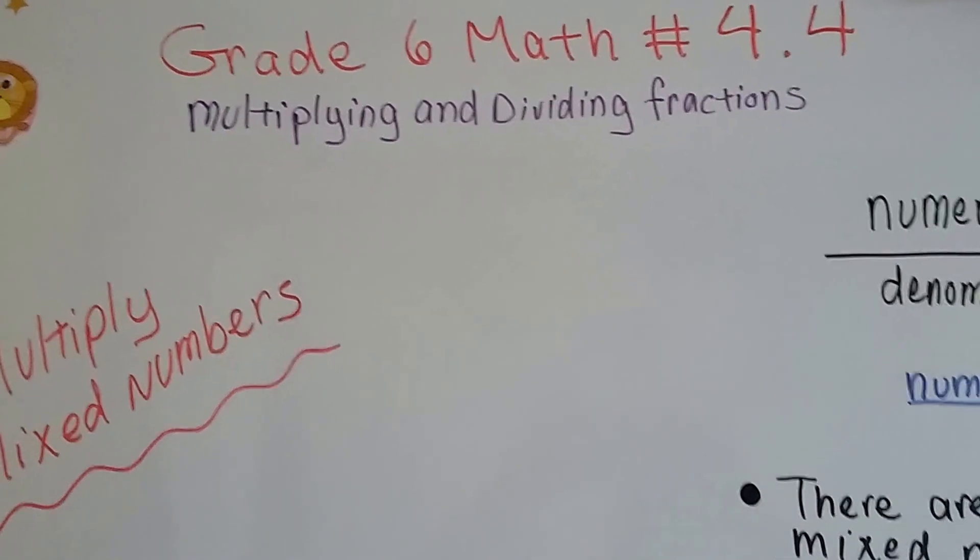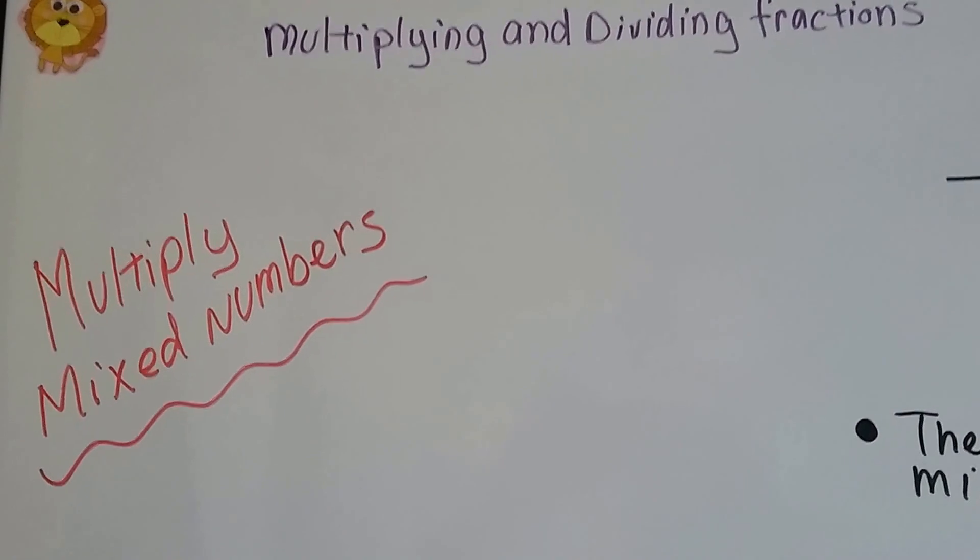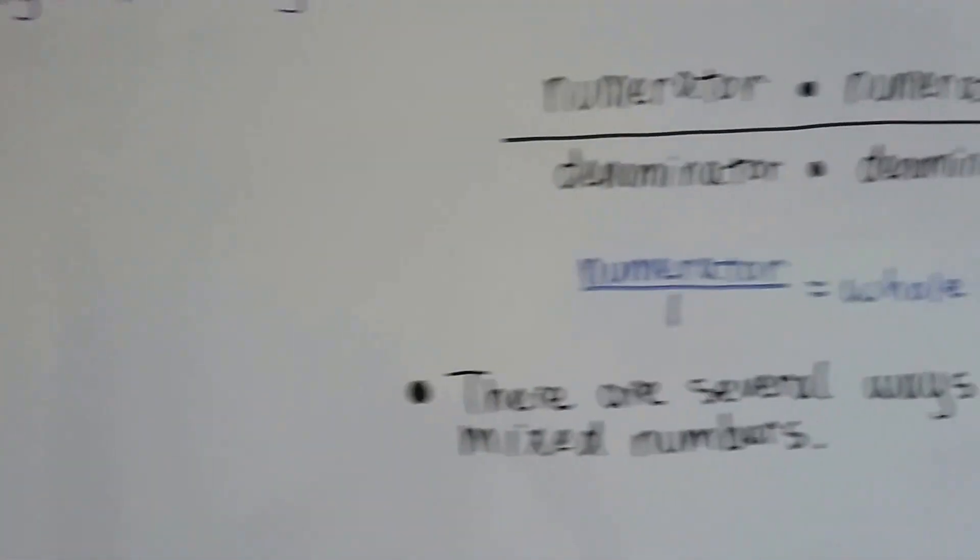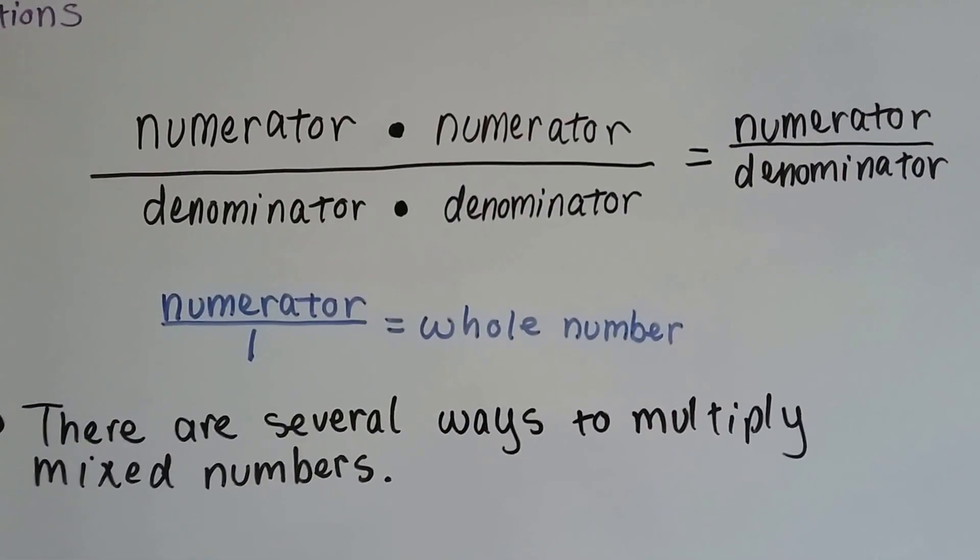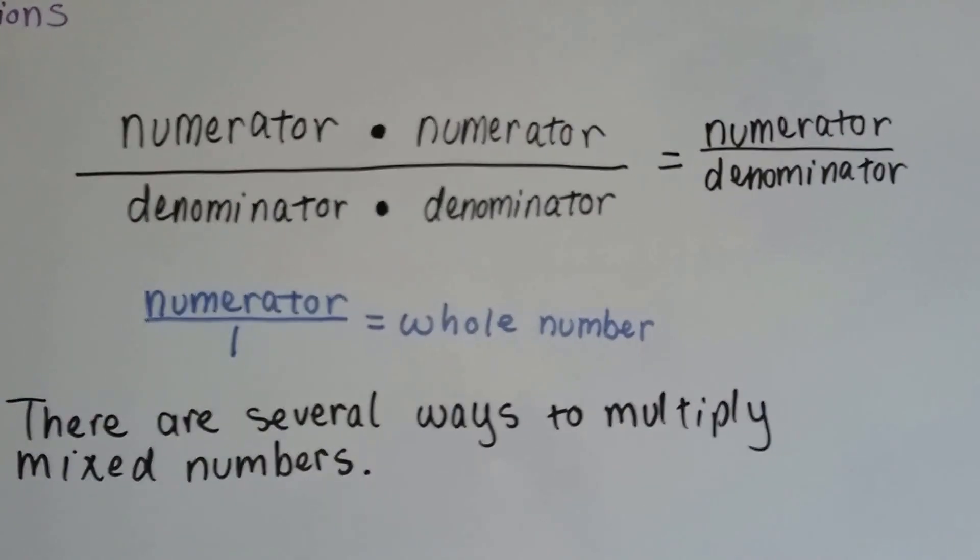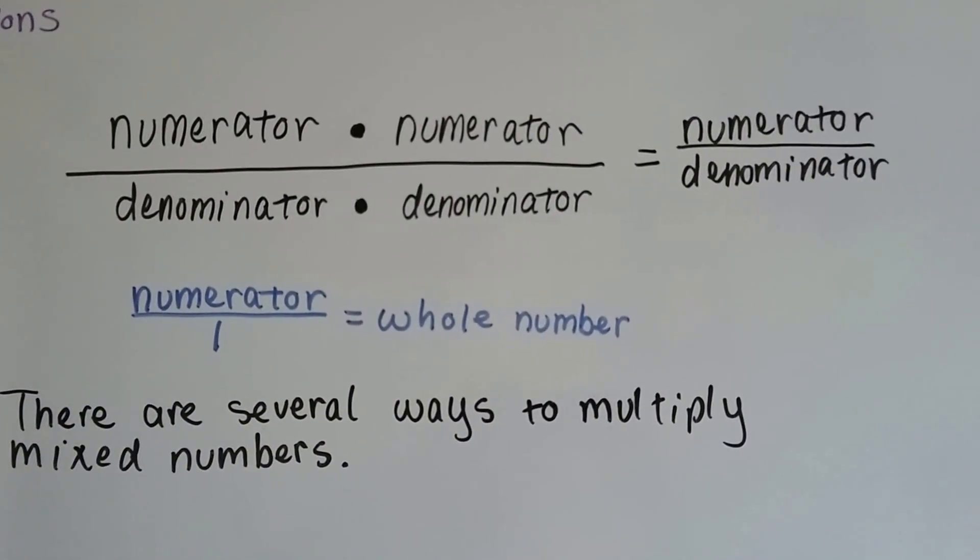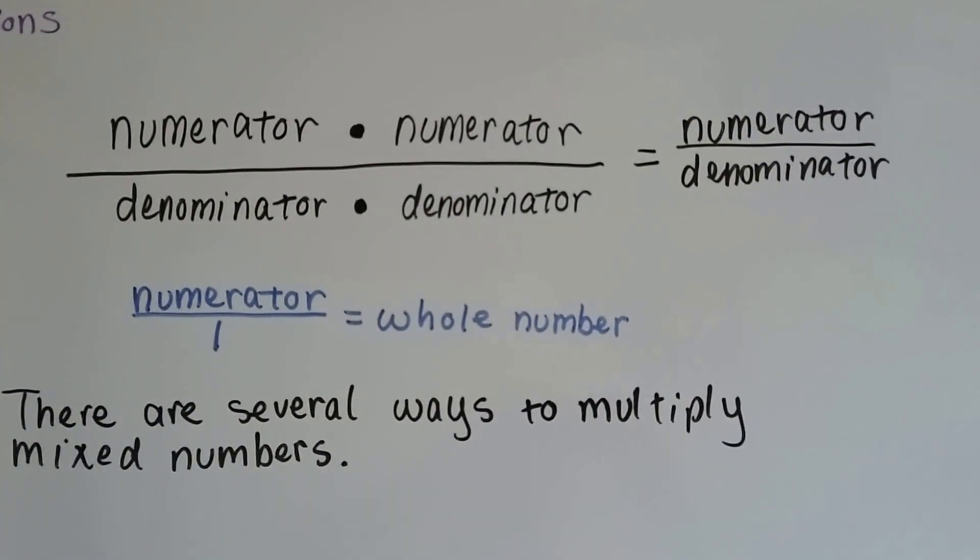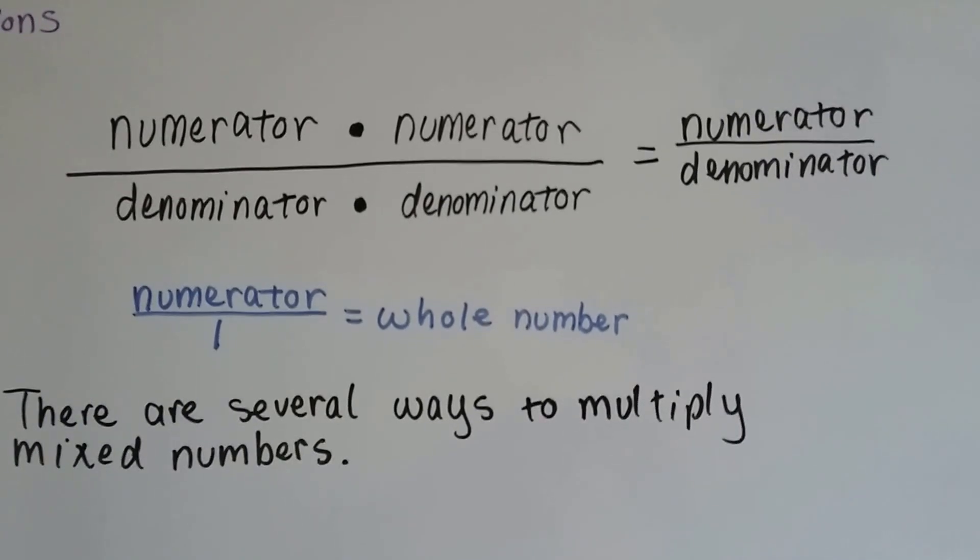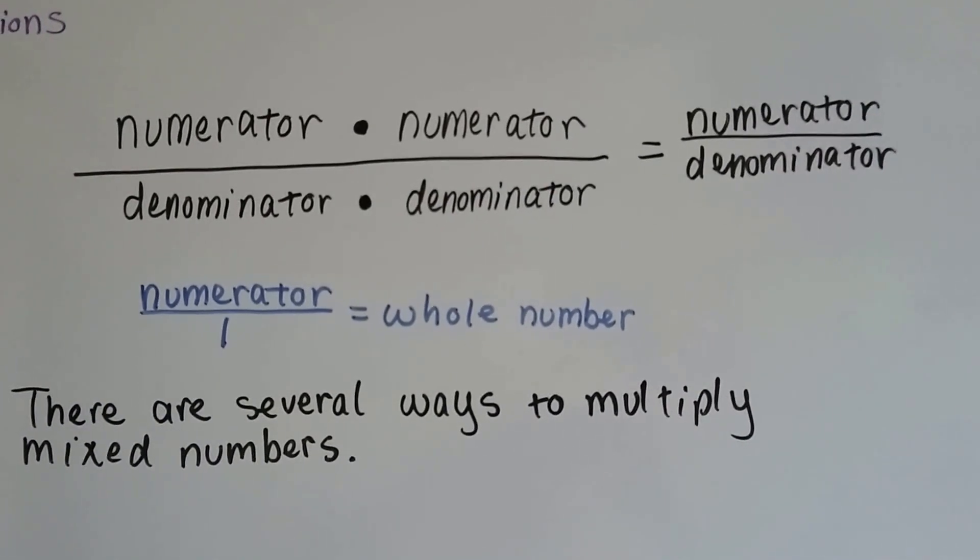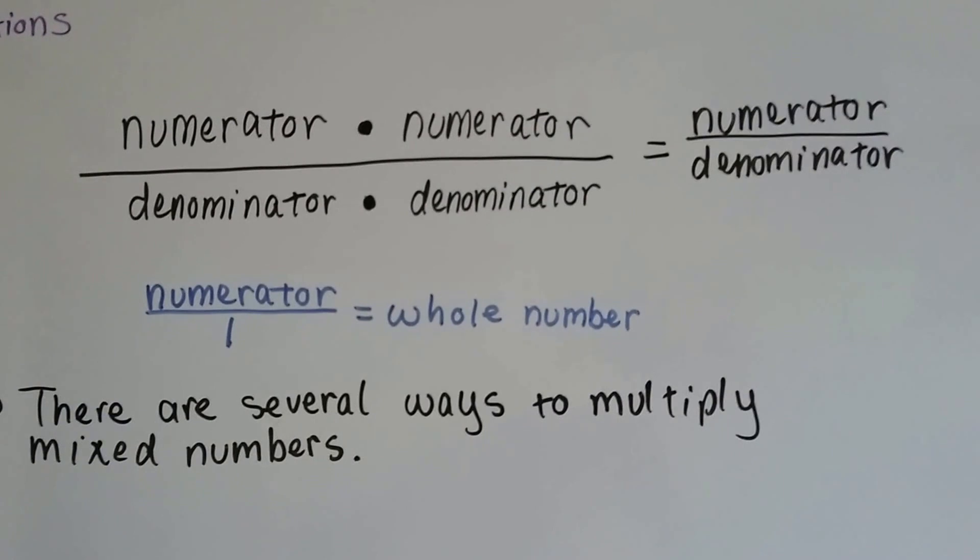Grade 6 math number 4.4, Multiply Mixed Numbers. As we've been multiplying fractions, we know that we can multiply a numerator by a numerator and a denominator by a denominator to get our multiplied fraction, to get our new product. We also know that we can take a whole number and put it over a 1 to turn it into a fraction.